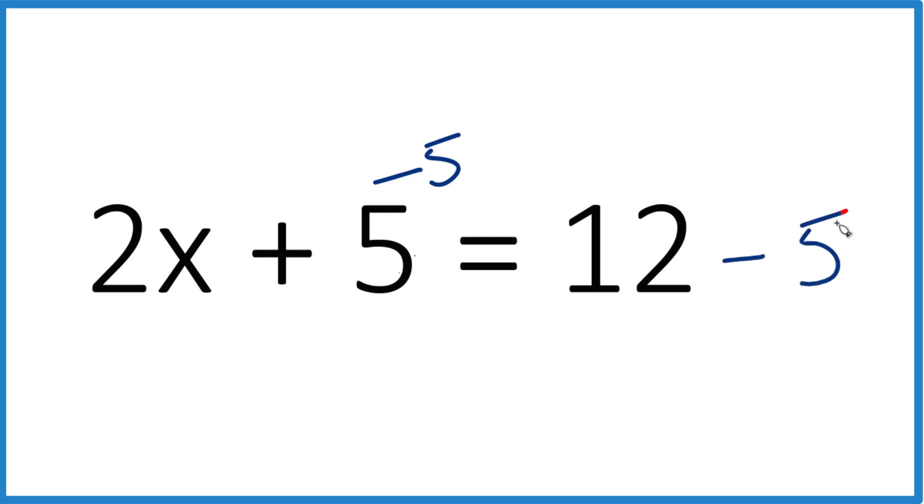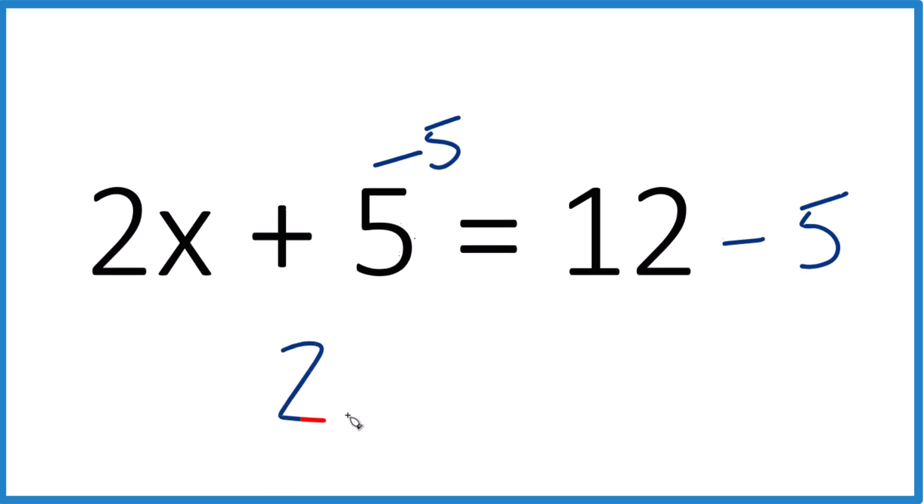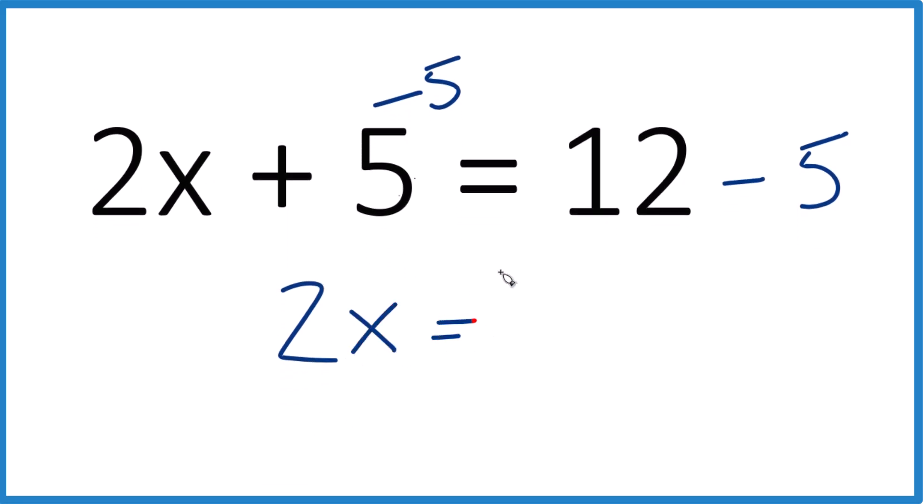So 12 minus 5 here. And 5 minus 5 is 0. So 2x plus 0, let's just call that 2x. And 12 minus 5, that's going to be 7.